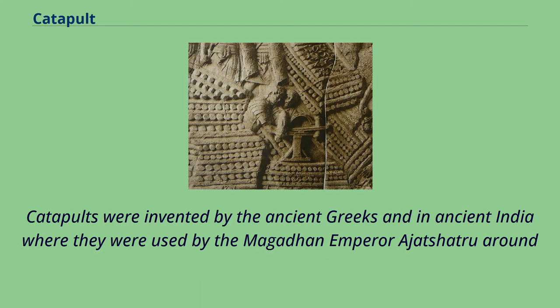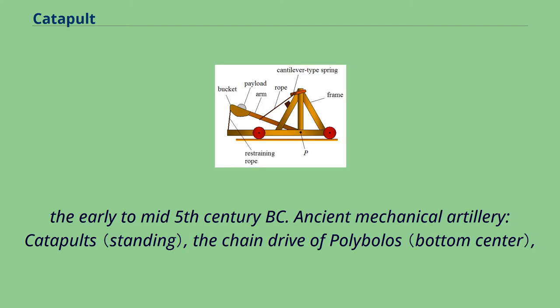Catapults were invented by the ancient Greeks and in ancient India, where they were used by the Magadhan emperor Ajatashatru around the early to mid 5th century BC.